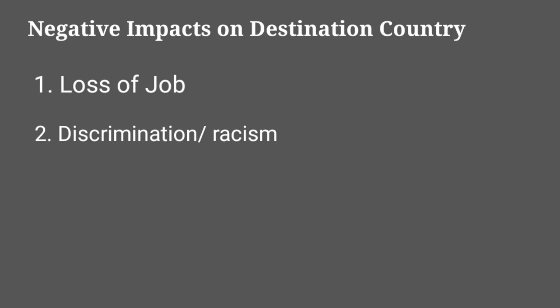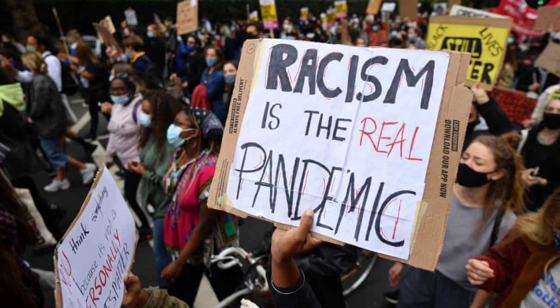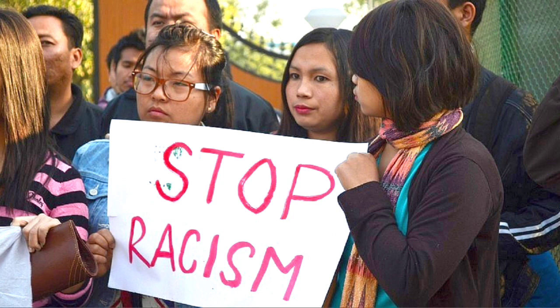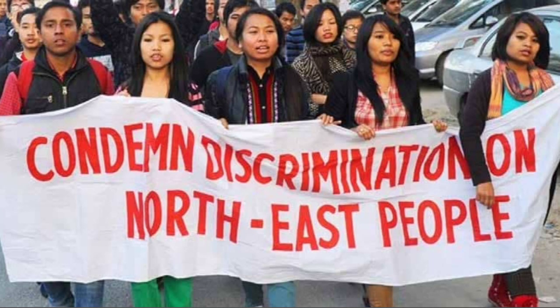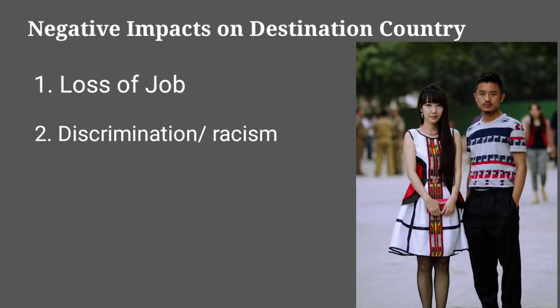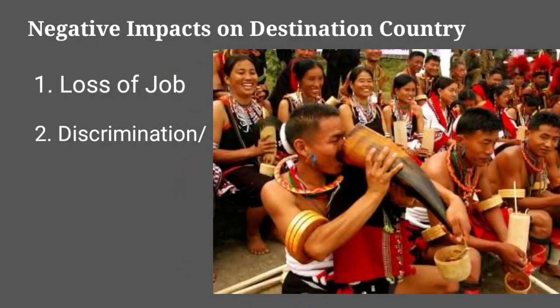Secondly, immigration can increase racism and discrimination. Immigrants who cannot speak the local language or do not behave like locals often find themselves not accepted in their communities and may be ignored. Indians living in the USA and Australia have faced such discrimination in recent times. Within India, people from Northeast India settling in metropolitan cities like Delhi and Bangalore face discrimination based on their facial structure, skin color, height, and overall appearance.